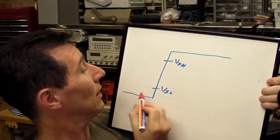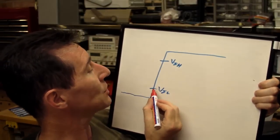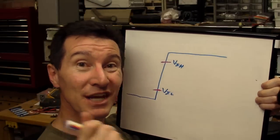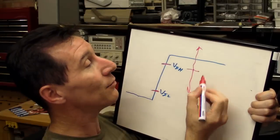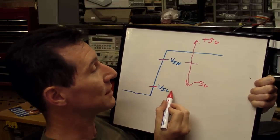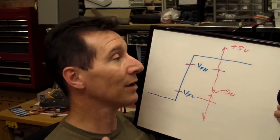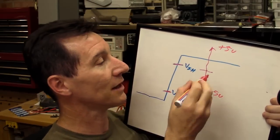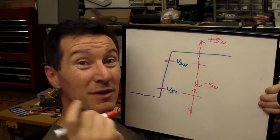Another thing to look for in a logic analyzer is input threshold settings. A good, higher quality mid-to-high range logic analyzer will actually have adjustable threshold levels — a DAC inside that you can actually set each of these levels anywhere from minus 5 volts up to plus 5 volts. You can adjust the threshold level, which is really useful. They will also have quick setup options for CMOS, TTL, low-voltage CMOS, and all that sort of stuff.